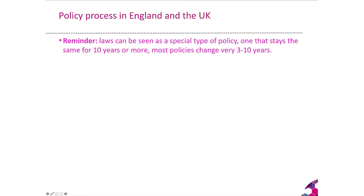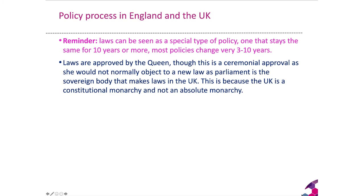Just a reminder: laws can be seen as a special type of policy — one that stays the same for 10 years or more, whereas most policies change every 3 to 10 years. Laws are approved by the Queen once they have passed through Parliament, through the House of Commons and the House of Lords, and have been agreed by the government. Her approval is ceremonial, as she would not normally object to a new law, because Parliament is the sovereign body that makes laws in the UK. The Queen is a constitutional monarch with constrained powers — she cannot create her own laws; only Parliament and governments can do that.